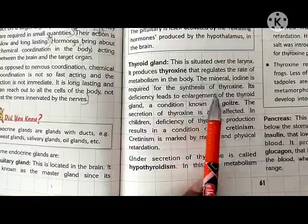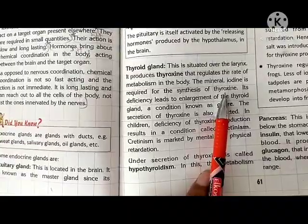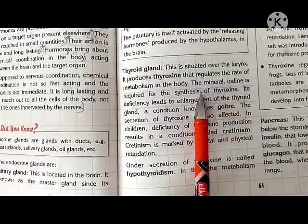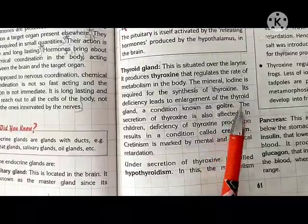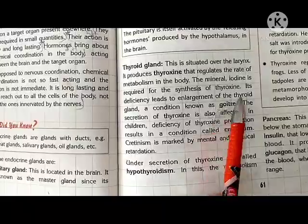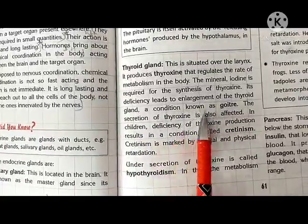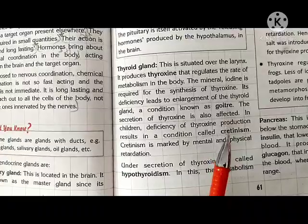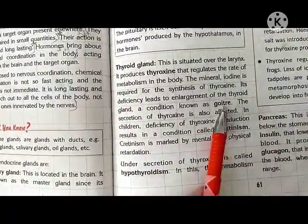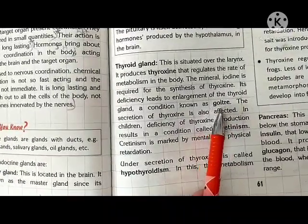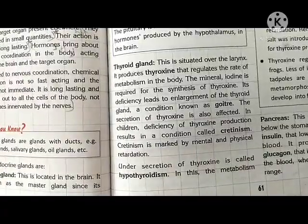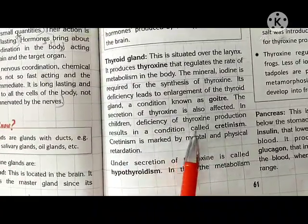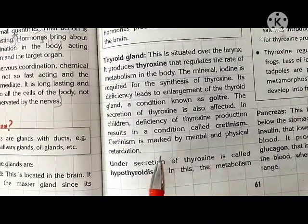The mineral iodine is required for the synthesis of thyroxin. If iodine is present in very low amounts in your body, thyroxin hormone production is inhibited, and its deficiency leads to enlargement of the thyroid gland — a condition known as goiter. Goiter is a condition where the body faces deficiency of iodine, and the symptom is that the neck region of the person becomes swollen and inflamed.